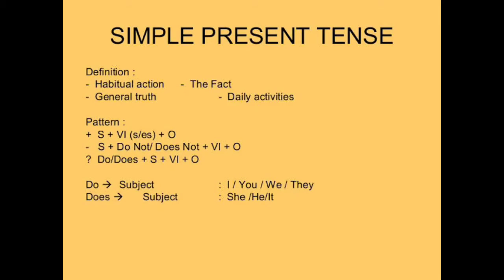Look at the pattern: for positive, use subject + verb 1 (base form + S/ES) + object. See here — singular subjects I, you, he, she, it. I must be used with 'am': 'I am happy.' 'You are at school.' 'He is hungry.' 'She is a nurse.' 'It is big.' These are all positive sentences using am, is, and are.